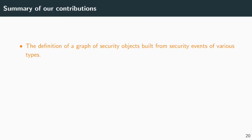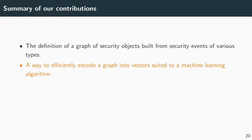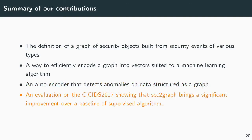To conclude, our contributions are the following. We propose a definition of a graph of security objects built from heterogeneous security events. We also proposed a way to efficiently encode a graph into vectors suited to machine learning algorithms. We then built an autoencoder able to detect anomalies on data structured as a graph. Finally, we proved the efficiency of the Sec2Graph approach by showing that Sec2Graph brings a significant improvement over a baseline of supervised algorithms.